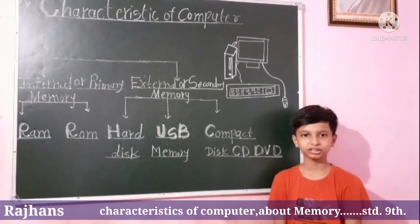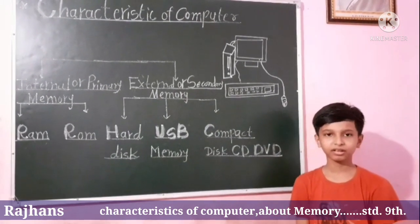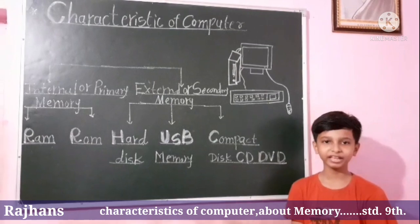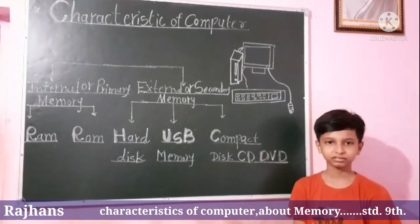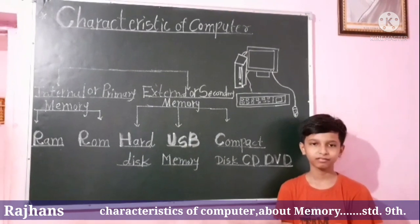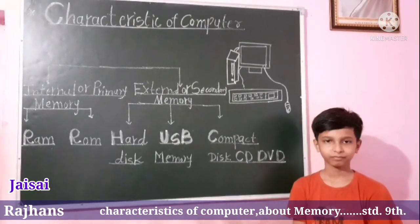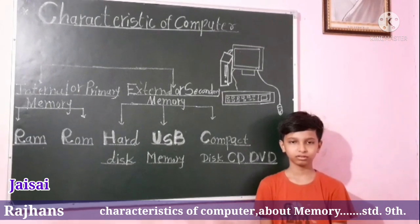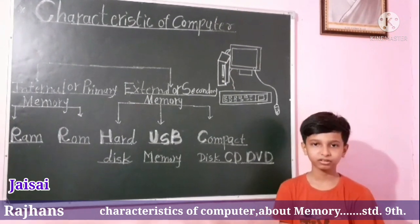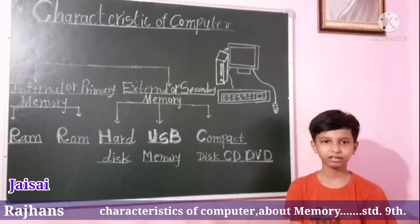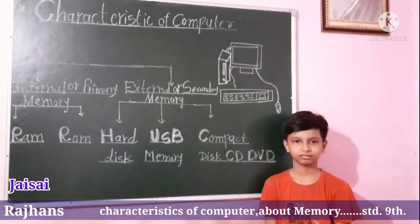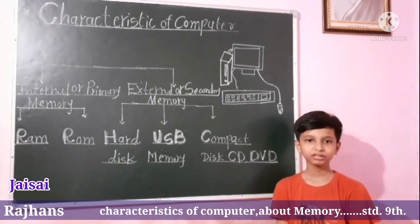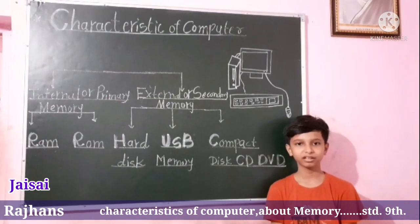Fourth, storage — the computer can store a very high amount of memory. The computer can store data and information. The computer can repeat tasks at the same speed and can do unlimited tasks at once.